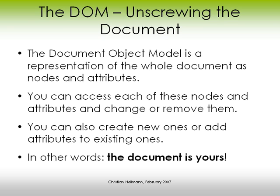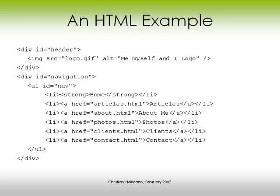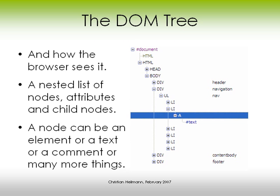Let's take an HTML example. We have a nested list with the id 'nav' and loads of li elements in it, some links, and we're going to use different DOM methods on it to show you how it's done. This is how we see it as humans, but a browser gets the HTML document completely differently — as a nested list of nodes, attributes, and child nodes. A node can be an element, a comment, text, or an attribute. For our purposes here we only need element and text nodes.